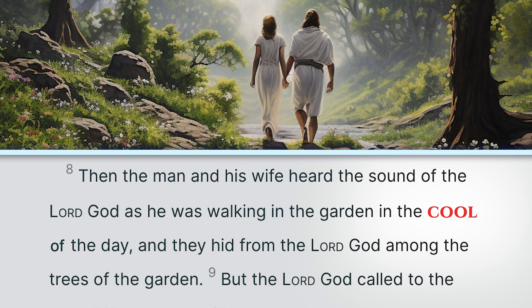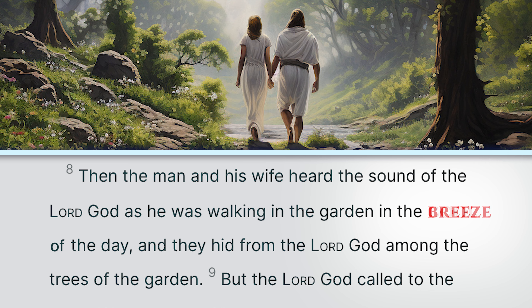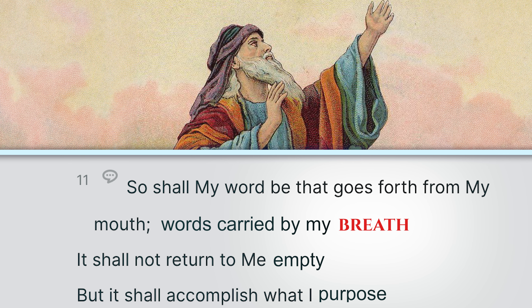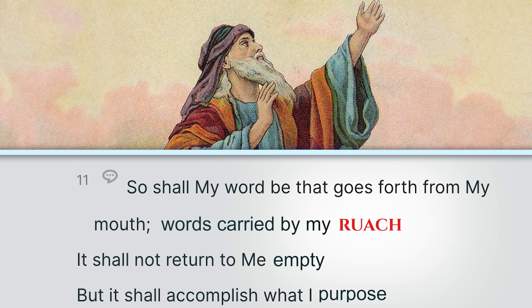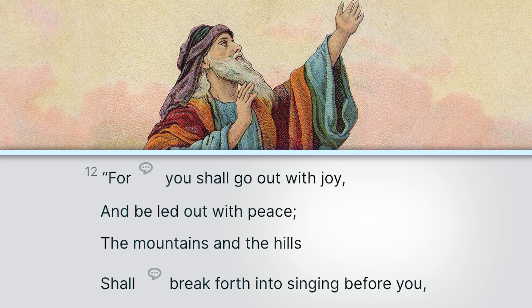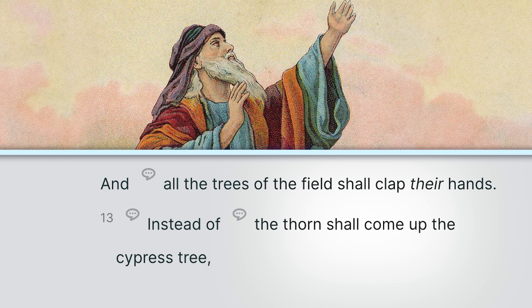So when God walks with Adam and Eve in the garden, the Hebrew word ruach can mean that God walks with them in the breeze of the day or the breath of the day. If we begin to understand that God walks with man as spirit, breath, or wind, we see this concept show up all through the biblical text. When you read Isaiah 55 — 'so shall my word be that goes out from my mouth, words carried by breath, ruach; it shall not return to me empty, but it shall accomplish what I purpose. For you shall go out in joy and be led forth in peace, and the mountains and the hills before you shall break forth into singing, and all the trees of the field shall clap their hands.' Why are the trees clapping their hands? The ruach of God has passed through them — the breath of God has blown through. Every time I see the leaves clapping in the wind, I'm reminded that God still walks with man, just as he walked with Adam and Eve in the breeze of the day.